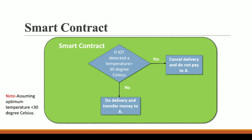Some of you might be thinking: how is this different from any other program written in C, C++, or Java? What is special about smart contracts? The special thing is that smart contracts are immutable in nature, just like blockchain. You cannot erase data from blockchain, and once a smart contract is deployed to the blockchain, you cannot change anything in it. Once the logic is written, no one can erase it.